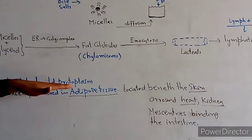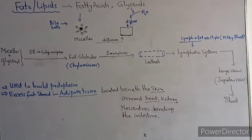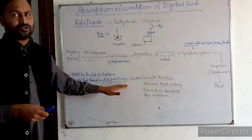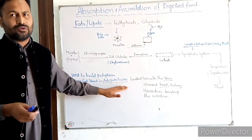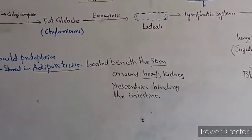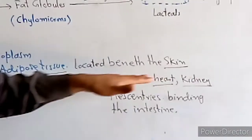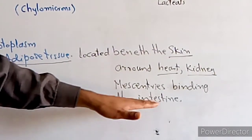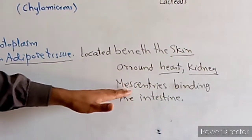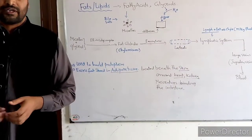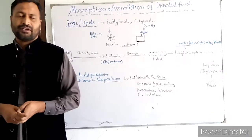Through the blood, fat is transported to different body parts and body cells. This fat can be used to build the cell membrane protocol. Excess fat is stored in adipose tissue, which is located beneath the skin surface and around the heart, kidneys, and intestines.